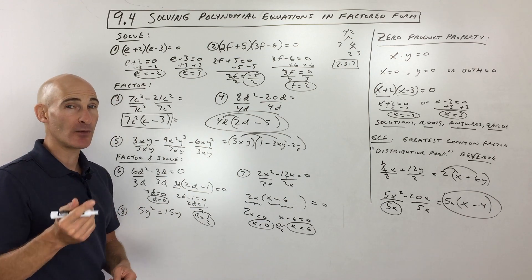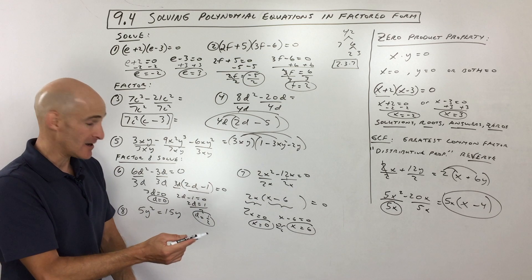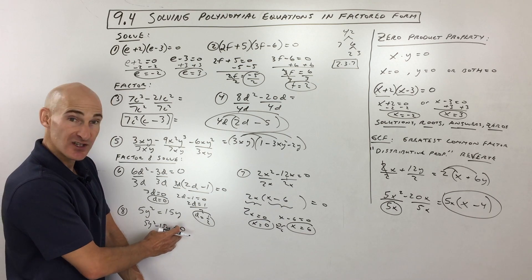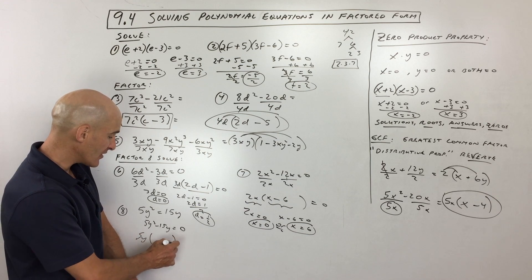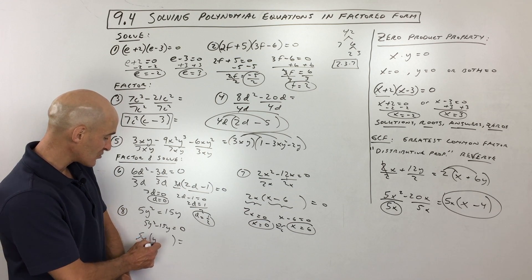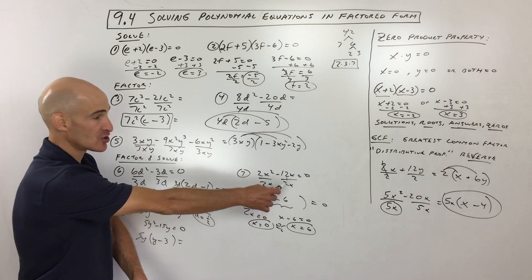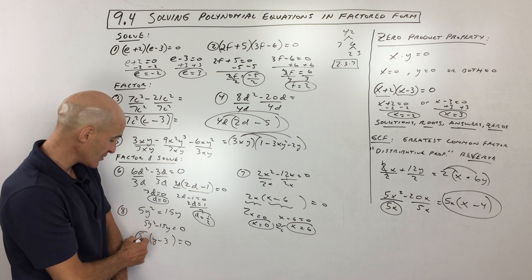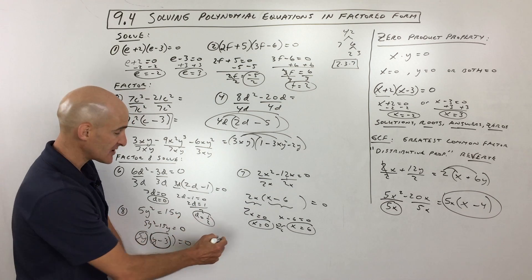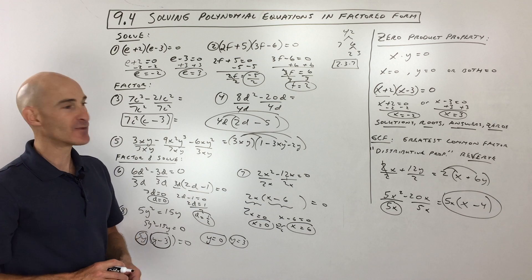Number 8 is interesting: it's equal to 15y, not zero. The key is we must subtract 15y from both sides first to set the equation equal to zero. Now factor out the greatest common factor — factor out 5y. Dividing: we're left with y minus 3 inside. So we get 5y times (y minus 3) equals zero. Setting each group to zero: 5y equals zero gives y equals zero; y minus 3 equals zero gives y equals 3. As you get better, you can skip some steps, but in the beginning show all your work.